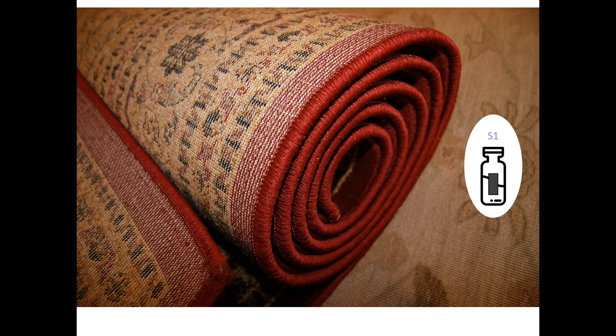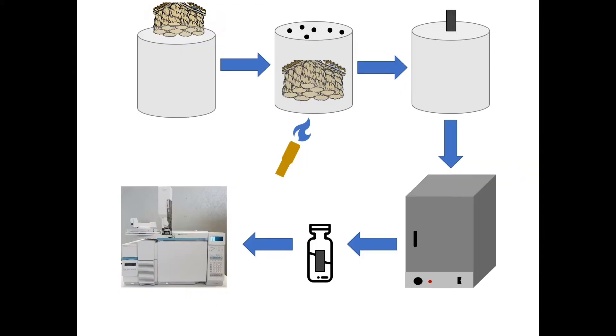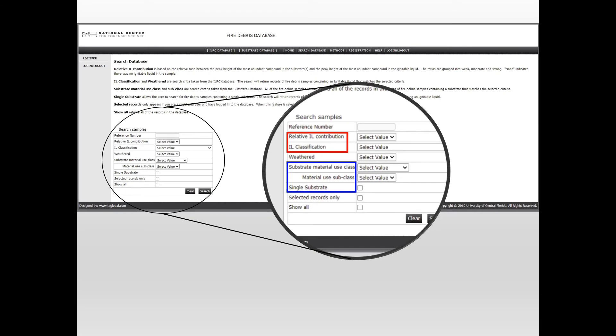Now, we will discuss the preparation of substrate samples. Substrates are burned utilizing a modified destructive distillation method. Pyrolysis and combustion products are extracted from the fire debris by passive headspace absorption following ASTM-E-1412. The volatile products absorb onto an activated carbon strip and are then extracted with a solvent. The extracted volatile products are analyzed utilizing the same GC-MS method as the ignitable liquids.